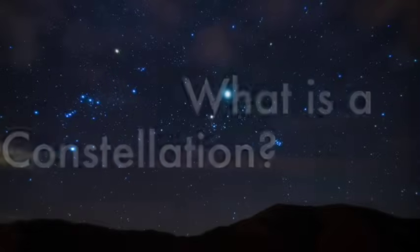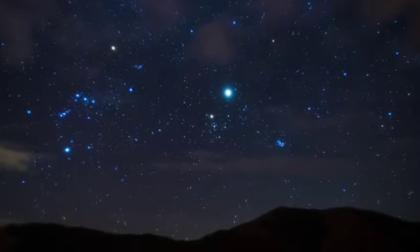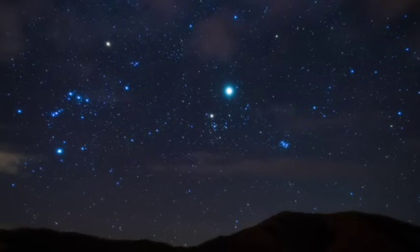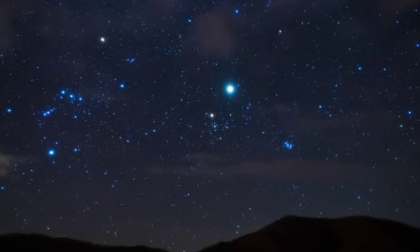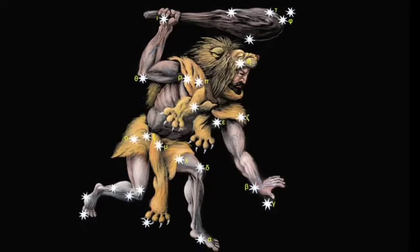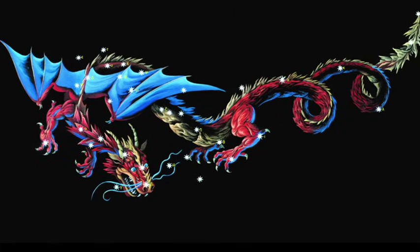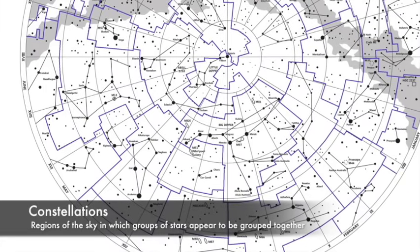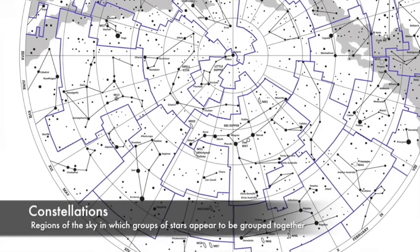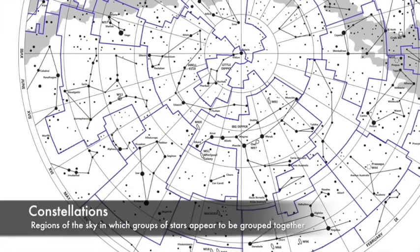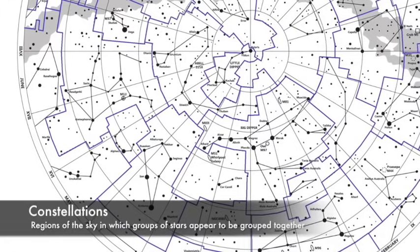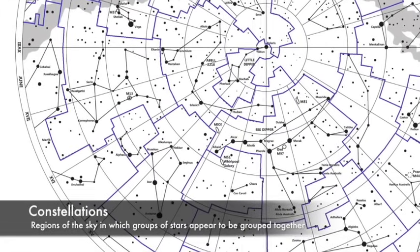What is a constellation? When you hear the word constellation, you might picture patterns of dots that are painted across the black sky. Some may think of mythical heroes and creatures placed in the sky by ancient gods because of their legendary accomplishments. However, in modern astronomy, a constellation refers to a particular region of the sky in which groups of stars appear to be grouped together.